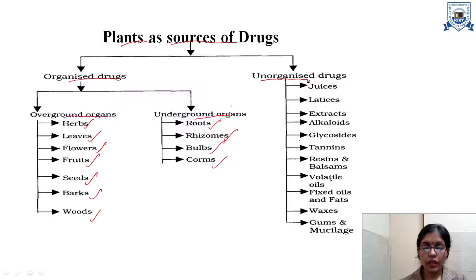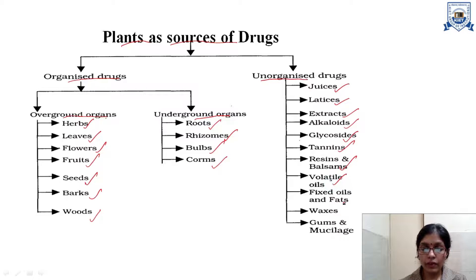The unorganized drugs include juices, lattices, extracts, alkaloids, glycosides, tannins, resins and balsams, volatile oils, fixed oils and fats, waxes, and gums and mucilage.